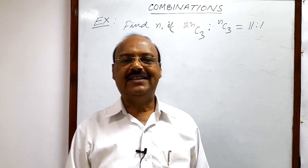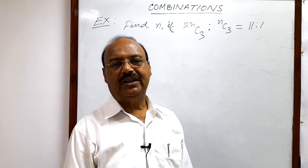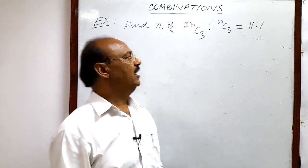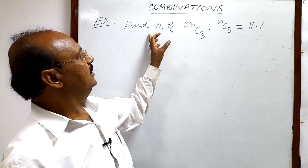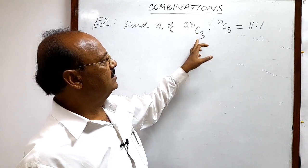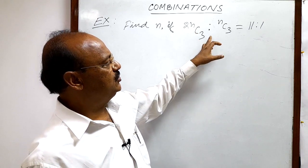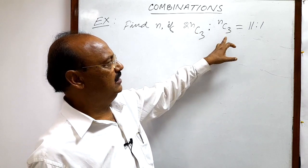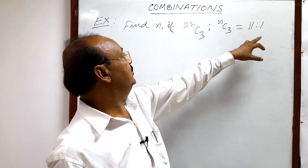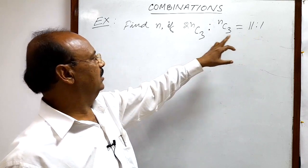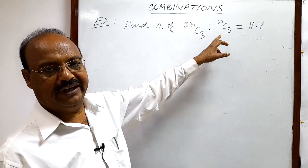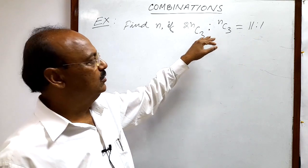Welcome students. Here we will see a question from the chapter combinations. The question is: find n if 2nC3 is equal to 11 is to 1. We have to find the value of n.